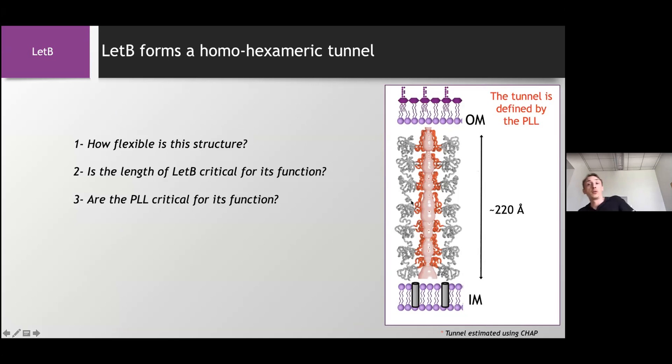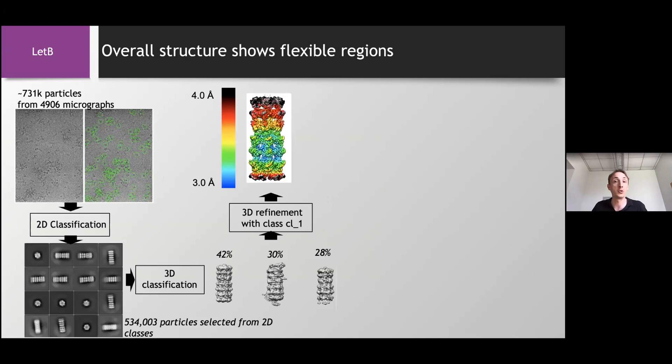So from this structure now we can have three questions I'm going to try to address. So first the question is how flexible is this structure? And the second is are the lengths and the pore lining loop critical for the function of LetB or not? So for the flexibility of the structure, let's go back to the data processing that we did. And if we look at the local resolution of the map, you can see that the ring number two to four have a much higher resolution showing less flexibility, while ring one, five, six and seven at the top show a lower resolution pointing towards probably a more flexible part of the structure.